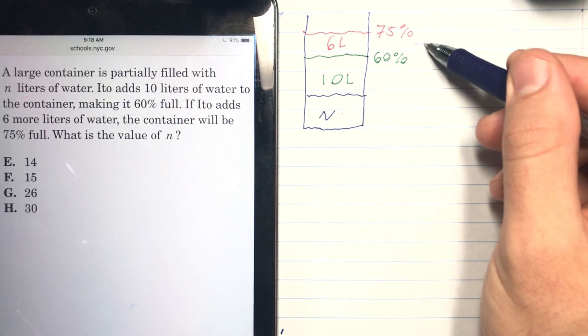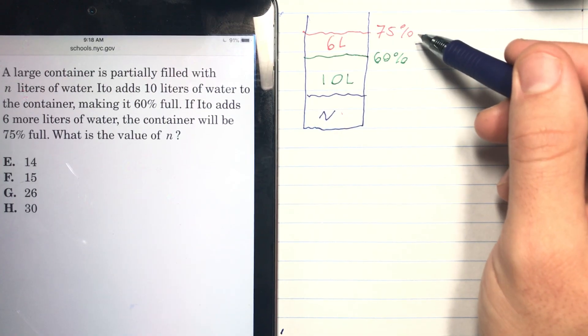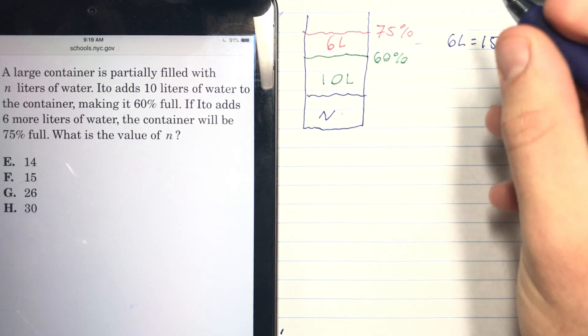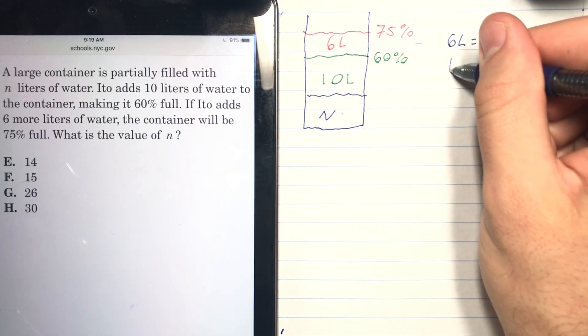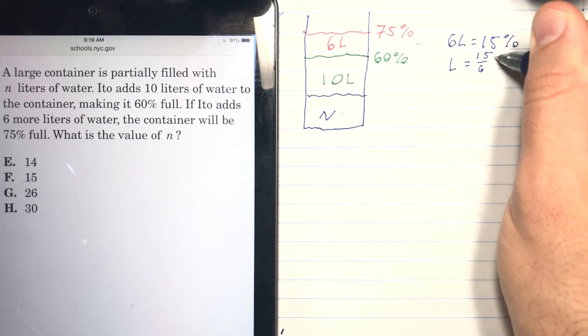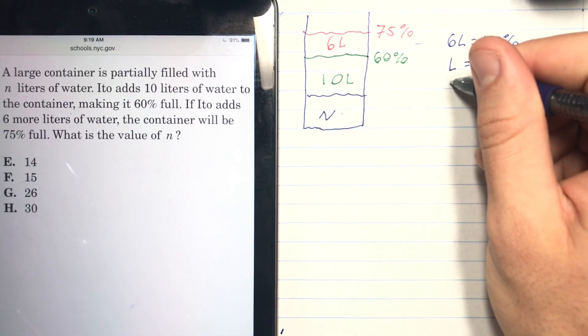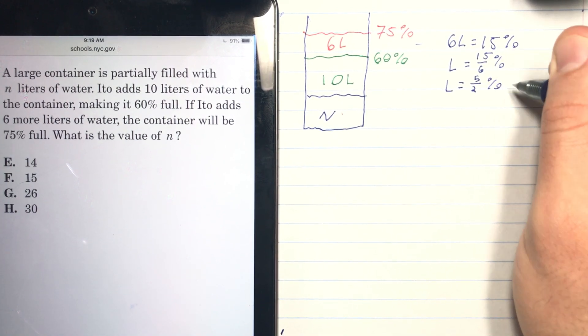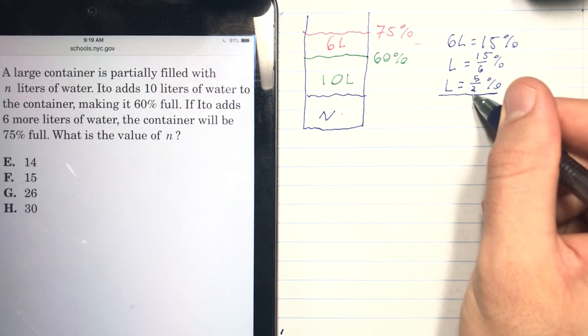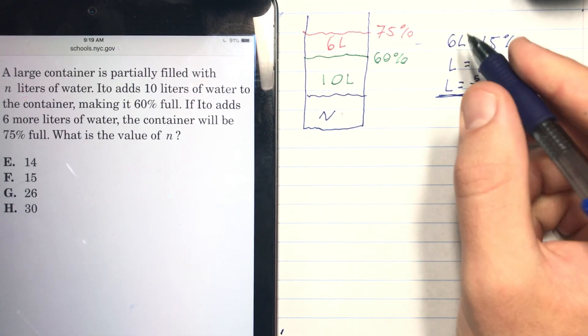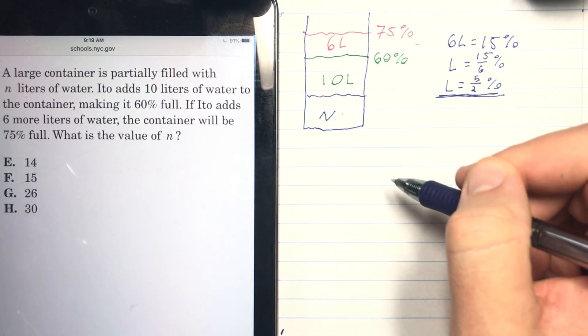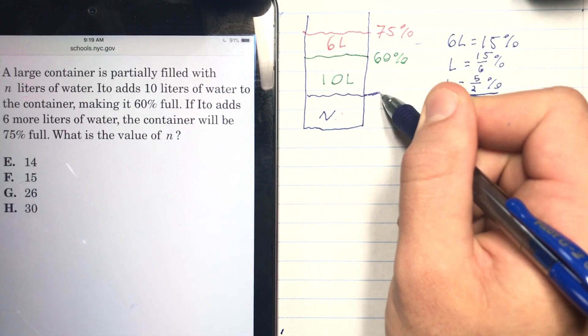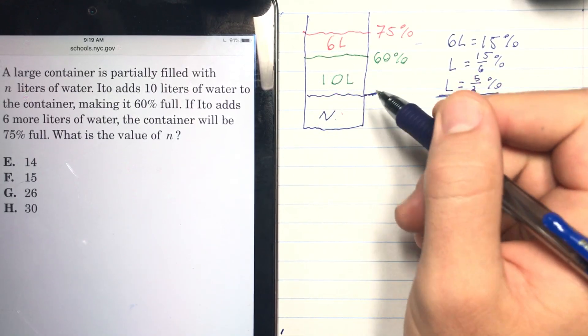What is the original amount of liters in the container? Our key here, the key to solving this, is this gap right in here between the 60% and 75%. Because we know that that gap is six liters, and we know that it's 15%, how much percentage is each liter added? Well, each liter added is 15/6%, and that can simplify. So each liter added is 5/2%. This is how much percentage each liter is when we added in, and this is important because now we can work our way backwards to get to n.